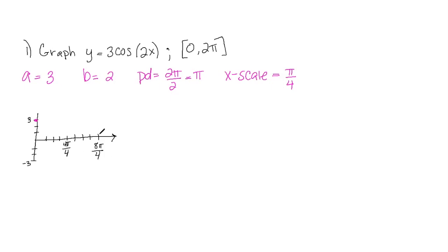The x-scale tells me how many points I need to plot. Moving over one x-scale unit at a time: three, zero, negative three, zero, three, zero, negative three, zero, three. Then I just connect those points. That's it for this example.